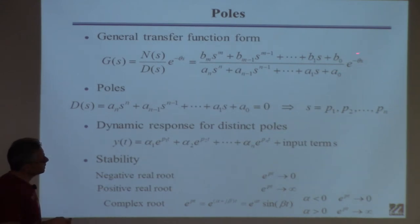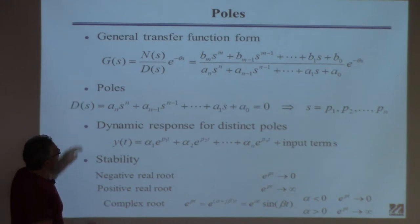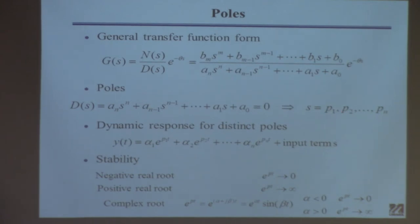We might additionally have a time delay, which I'll come back to in a minute. If we look at the roots of this denominator polynomial — we set that equal to zero and find the roots — the roots are going to be denoted P1, P2, and so on. It's an nth-order polynomial, so you're going to have N roots. These roots are called the poles of the system. As we'll learn pretty soon, these are exactly the same thing as the eigenvalues. When you take a linear system and find a transfer function, you compute these poles, and they're the same as the eigenvalues of the linear system.